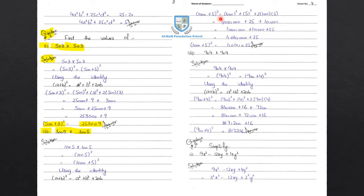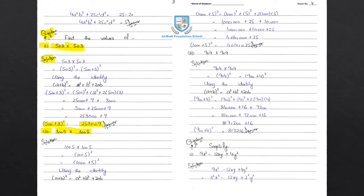1000 plus 5 whole square equals 1000 square plus 5 square plus 2 times 1000 times 5. 1000 square equals 1 million. 5 square equals 25. 2 times 1000 times 5 equals 10,000. So 1 million plus 10,000 plus 25 equals 1,010,025.